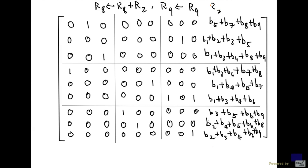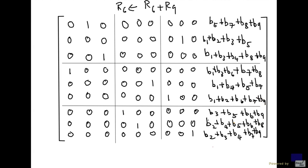Finally, add row 9 to row 6, giving 0, with b1 plus b2 plus b6 plus b7 plus b9 on the right-hand side. Now every column has exactly one 1 and the rest are 0, and the same goes for every row. From this reduced matrix we can read out the solution for x1 through x9.